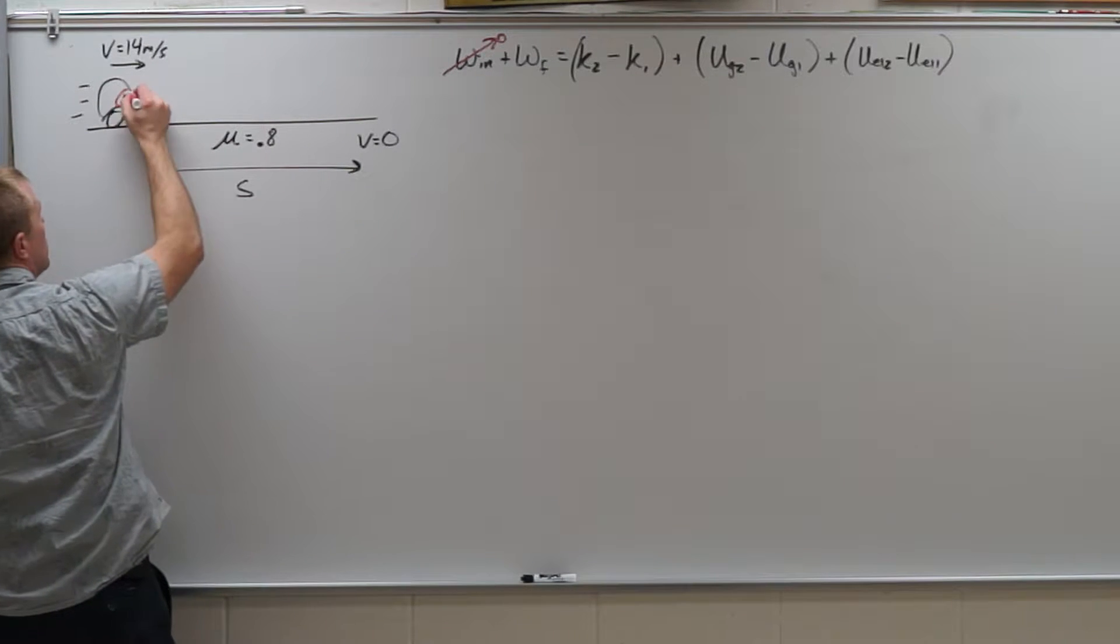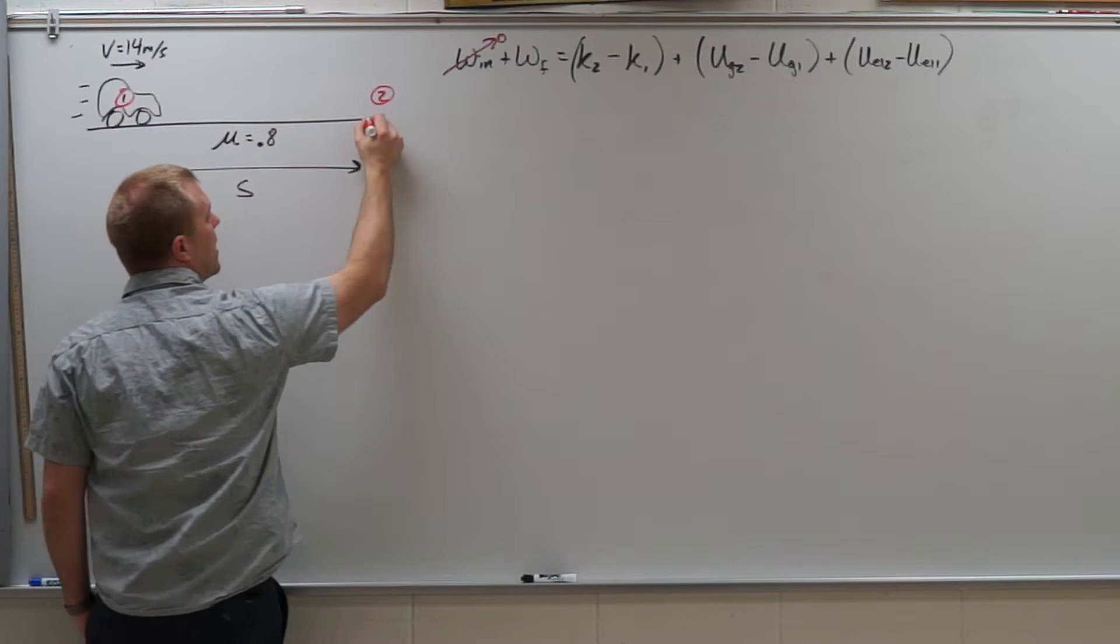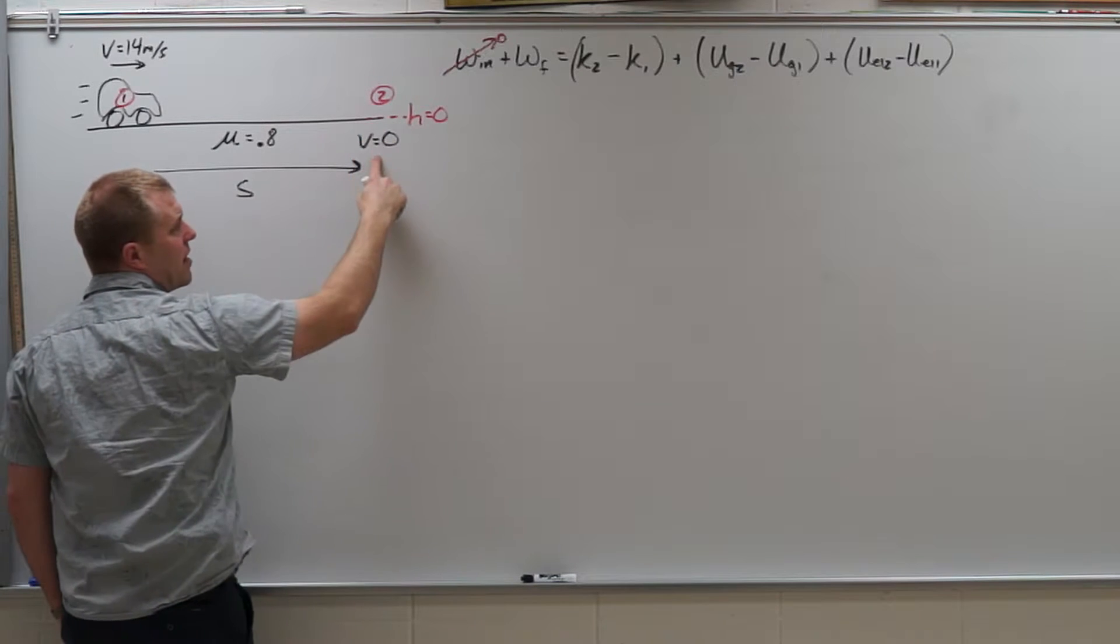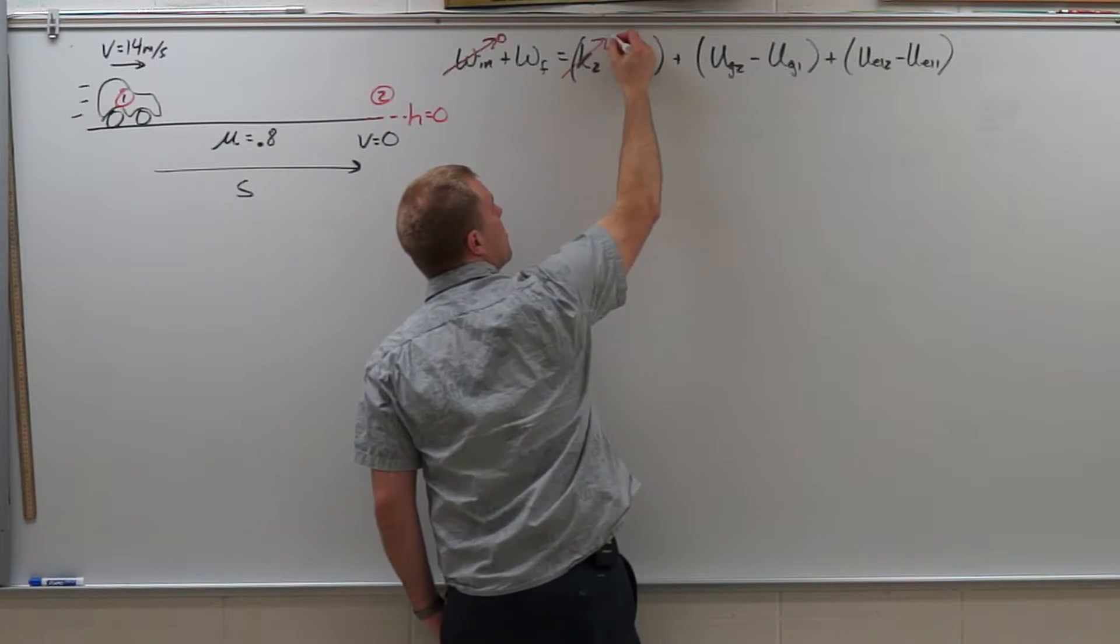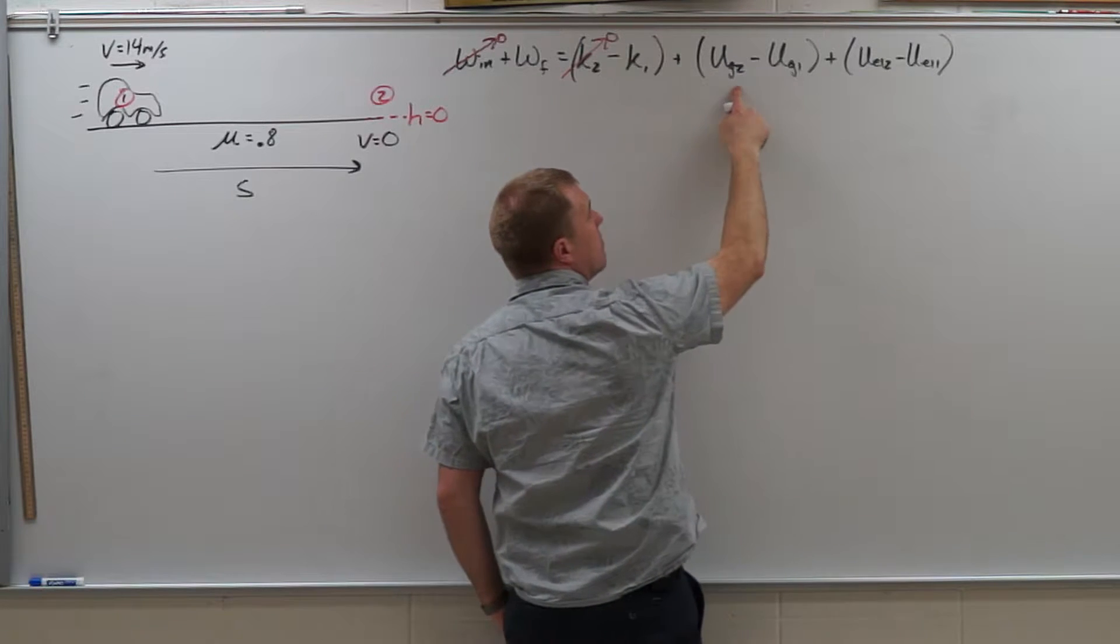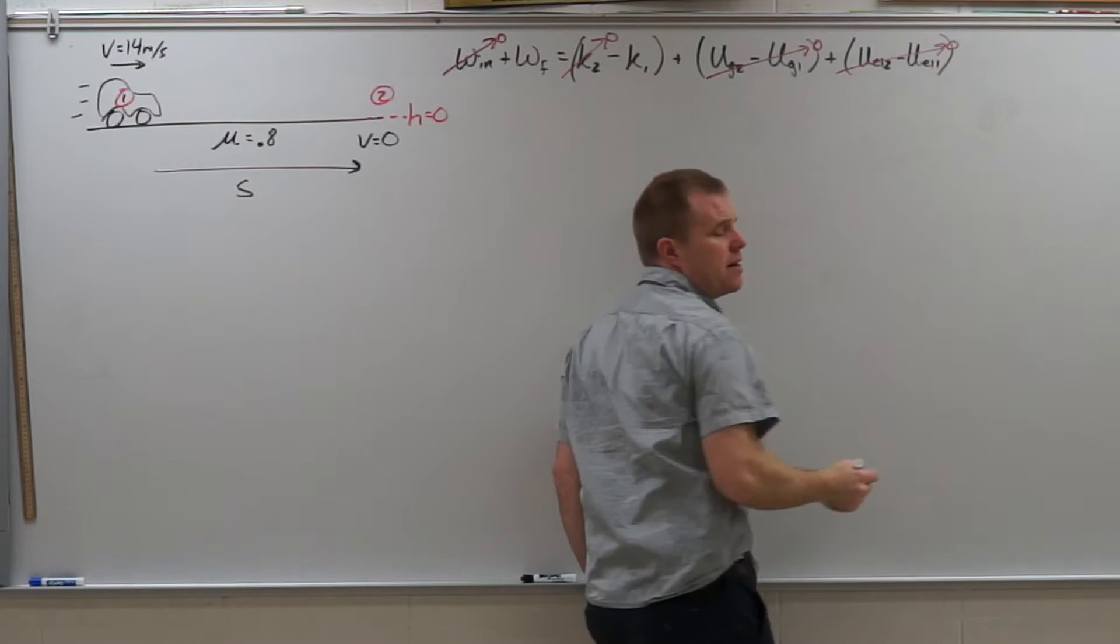I do have to identify points 1 and 2, so I start at point 1 and end at point 2. I will choose a height of 0 to be at the ground level. At point 2 it does come to a stop, so k2 is 0. It's moving at point 1, so I do have k1. Height 1 and height 2 are both 0 and there's no springs in my problem.